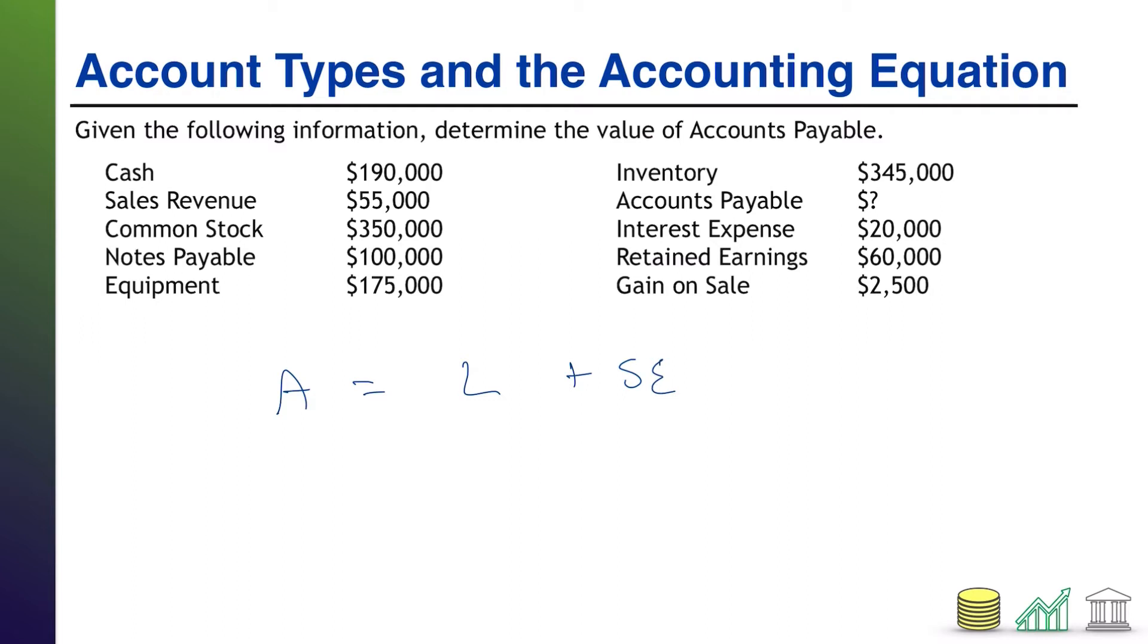And accounts payable, that word payable tells us we owe someone money or this is a liability. So accounts payable is part of this L. All right. Now, how are we going to figure out what accounts payable is worth? Well, we have an equation here. A equals L plus SE. And so if we can figure out the other components of the equation, then we can solve for our question mark, our missing number. It's basically an algebraic approach to solving an accounting problem.